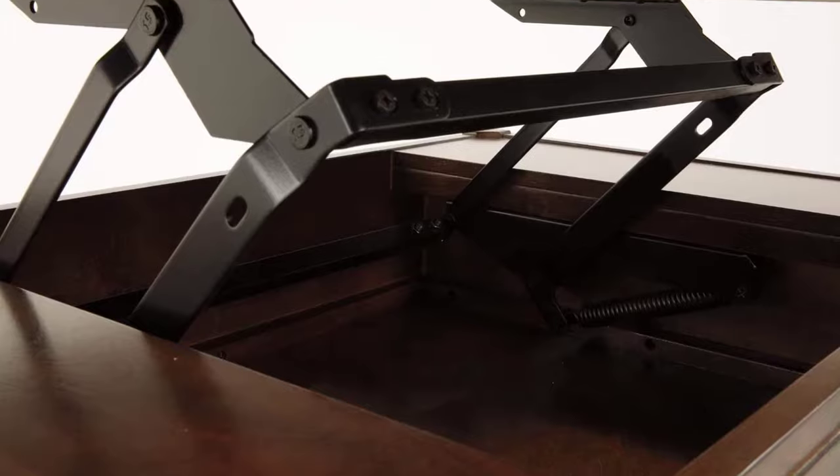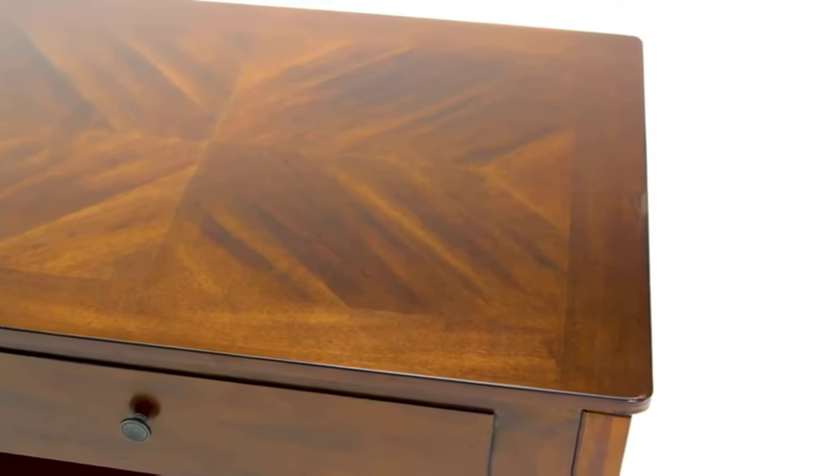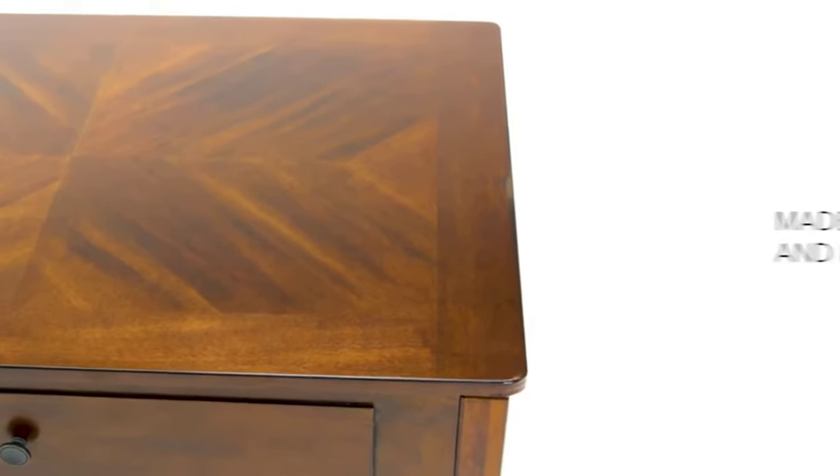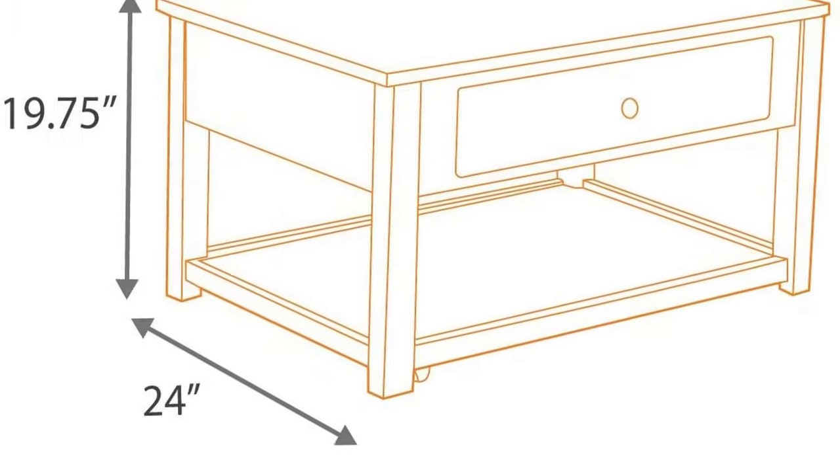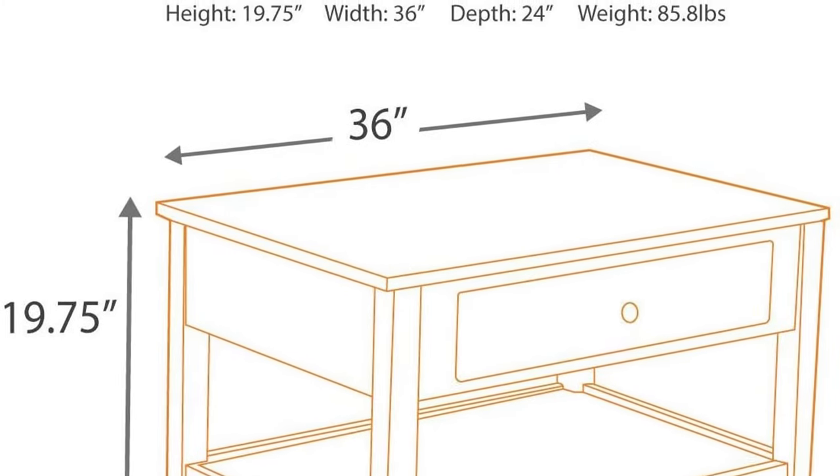There is a spring load mechanism that raises the tabletop effortlessly. The table comes with almost invisible caster wheels to move around easily. The color is espresso brown and all the tools required to assemble it are provided in the package. The product dimensions are 36 by 24 by 20 inches.